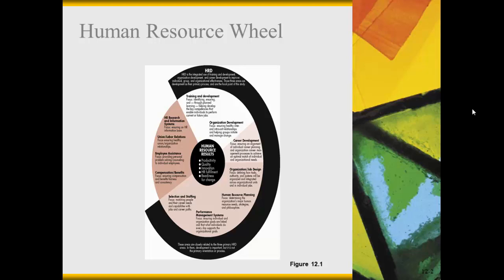We discussed the Human Resource Wheel in class, and basically what this wheel shows is all the organizational functions and activities that Human Resources actually handles for a company. They are much more oriented now toward productivity and quality, innovation, HR fulfillment, and preparing the company for change than they have been in prior decades.